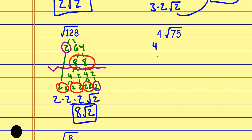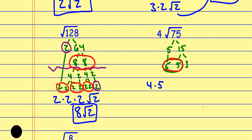For the next example — the square root of 75 with a coefficient of 4 — doing the factor tree: 5 times 15, then 15 is 5 times 3. Extending the branch, the prime factorization is 5, 5, 3. A pair of fives goes on the outside as 5, but there was already a 4 on the outside — it's all multiplication. The 3 is by itself, so it stays inside. The result is 4 times 5 root 3, which is 20 root 3.